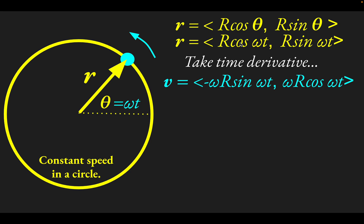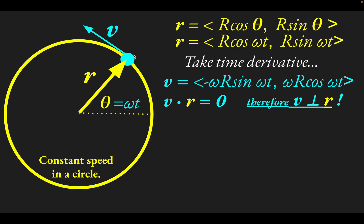Something you can notice right away is that if you take the dot product of the velocity vector and the position vector — multiplying x-components together and adding to y-components multiplied together — those two vectors are perpendicular; the dot product of v and r is zero. This means the velocity is perpendicular to the position vector, tangent to the circle, which makes intuitive sense. The magnitude of the velocity works out to r·ω, the radius times the angular velocity.